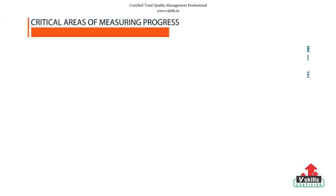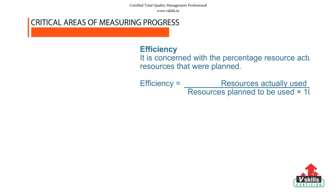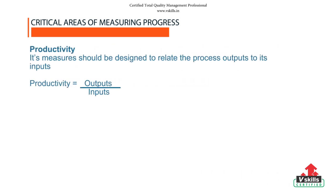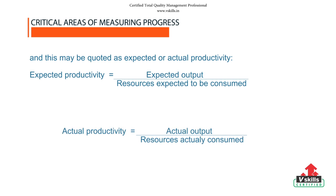The following are some methods of measuring progress. Efficiency is defined as the percentage of actual output over the expected output. It is concerned with the percentage of resources actually used over the resources that were planned. Productivity: its measure should be designed to relate the process outputs to its inputs, and this may be quoted as expected or actual productivity.